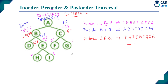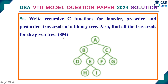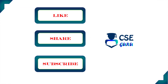Give proper explanation for this implementation. This is an 8-mark question: writing the C functions for in-order, pre-order and post-order traversal carries 4 marks, and finding all the traversals for the given tree carries another 4 marks. Thank you for watching this video.